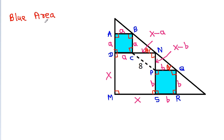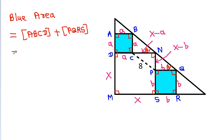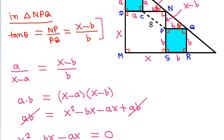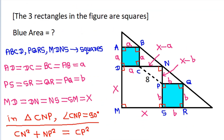Now the blue area equals area of ABCD plus area of PQRS. Area of ABCD is a squared and area of PQRS is b squared, and a squared plus b squared is 64. So the answer is 64.